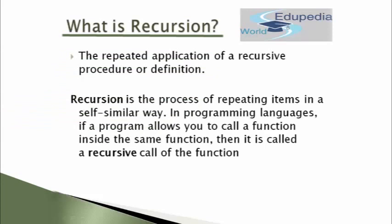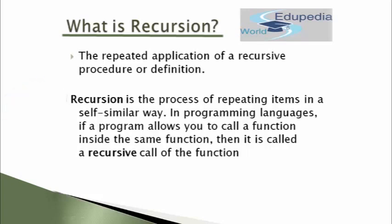The repeated application of a recursive procedure or definition is called recursion. Recursion is a process of repeating items in a self-similar way. When we say self-similar, that means you are repeating elements or repeating a calling of a function again and again from within the same function. In a programming language, if a program allows you to call a function inside the same function, then it is called a recursive call of the function.